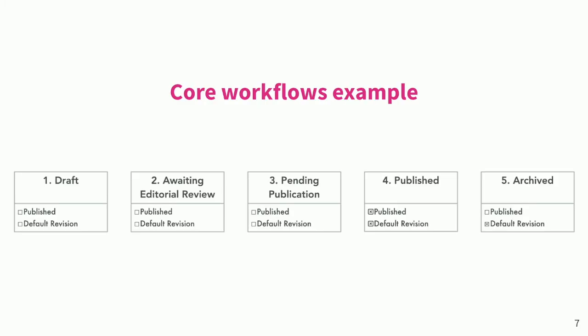Let's look at an example with five states. A state is the really basic concept of workflows — it's the logical stage that your content can be in as it progresses through its life cycle on your site. We've got five here: draft, awaiting editorial review, pending publication, published, and archived. Each state has two settings: whether a revision saved into that state is considered published or not, and whether a revision saved into that state becomes the default revision or not. That's where transitions come in — transitions are the ways that your content moves from state to state.